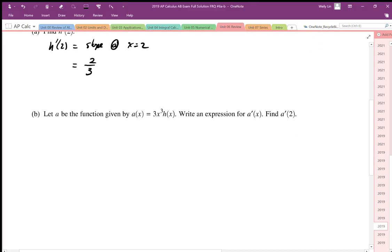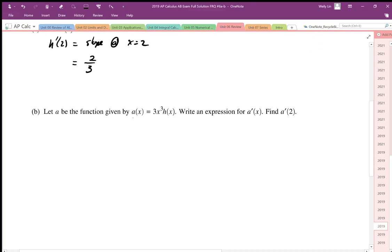Part b says let a be the function given by a(x) equals 3x³ times h(x) and says write an expression for a prime x and then find a prime at 2. First we have to understand they're asking us to differentiate this using notation.